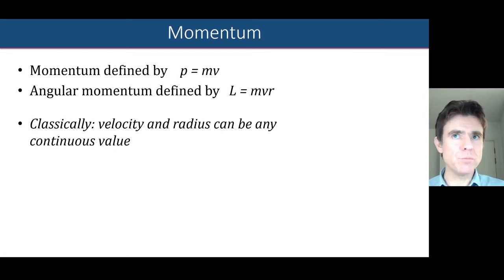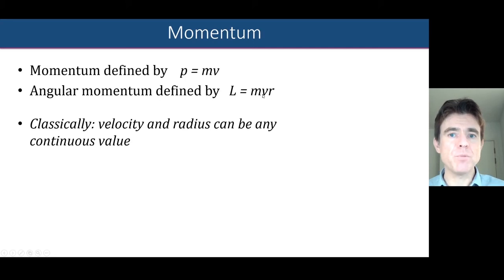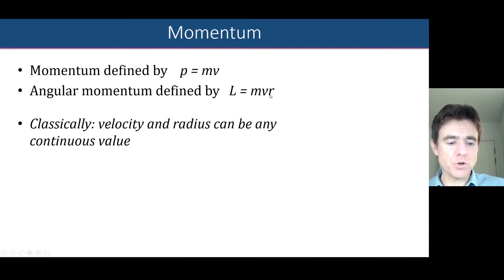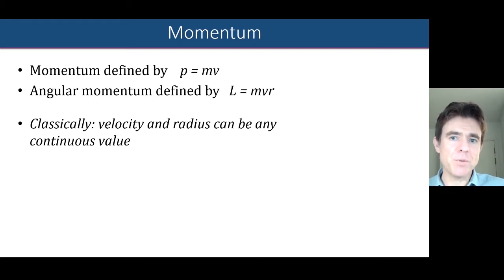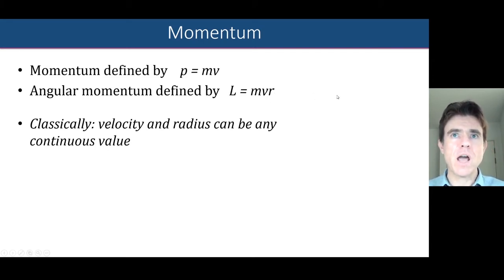Well, first of all, what is momentum? We know that momentum is just defined by the mass of an object multiplied by its velocity. So if you increase an object's velocity or increase its mass, you'll be increasing its momentum. In a similar fashion, angular momentum is defined by mv, but now also multiplied by the radius. So with angular momentum, we're thinking about an object moving in a circle, in an orbit, and it has a mass, a velocity, and a radius of its circular motion.